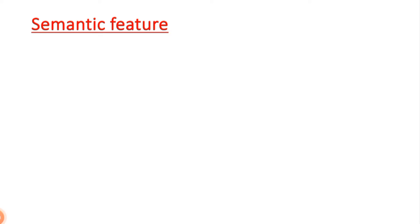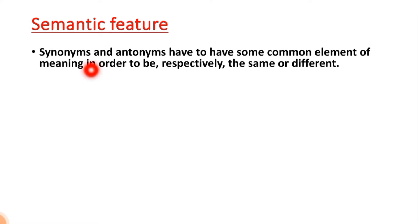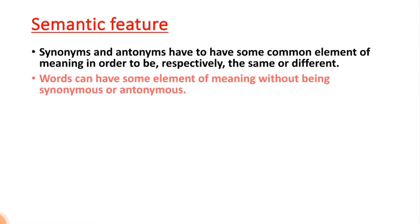The first aspect is semantic feature. Synonyms and antonyms have to have some common element of meaning in order to be respectively the same or different. As we discussed in the previous lecture, if two words are synonyms they have the same meaning, and if two words are antonyms they have different meanings. So synonyms share a common element of meaning and antonyms have a different element of meaning.